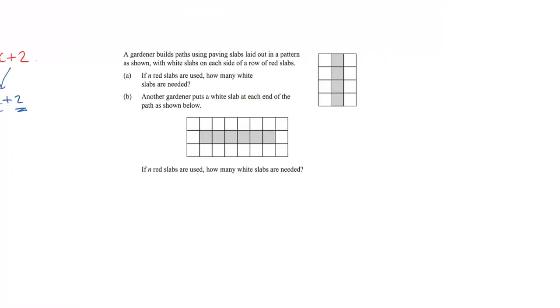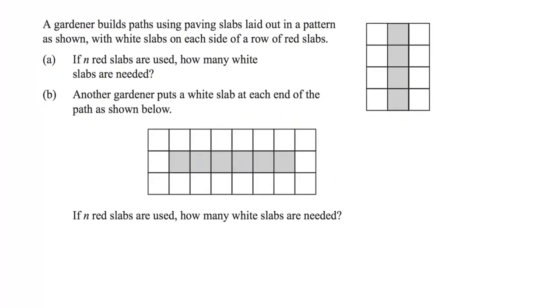On to our final example. A gardener builds paths using paving slabs laid out in a pattern, as shown, with white slabs on each side of a row of red slabs. We're referring to this picture here. If N red slabs are used, how many white slabs are needed? Well, of course, for every one of these red slabs, which we kind of are here, we have double the amount. This one has two whites either side. The one underneath has two whites either side. So if there are N red slabs, we need 2 times N, or in other words, 2N.